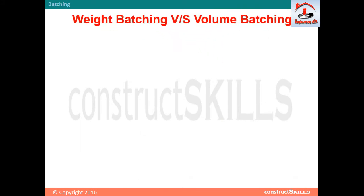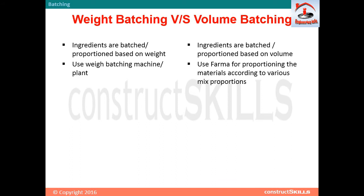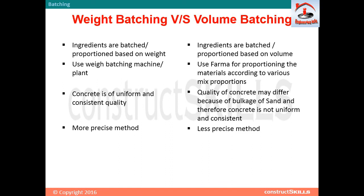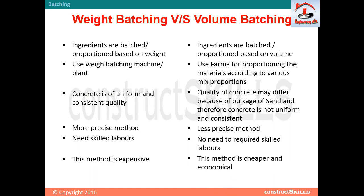Comparing weight batching versus volume batching: weight batching proportions ingredients based on weight using a batching machine or plant, while volume batching uses farmer boxes for proportioning. Weight batching produces uniform and consistent quality concrete, whereas volume batching may vary due to bulkage of sand. Weight batching is a more precise method but requires skilled laborers and is more expensive, while volume batching is less precise but cheaper and economical.